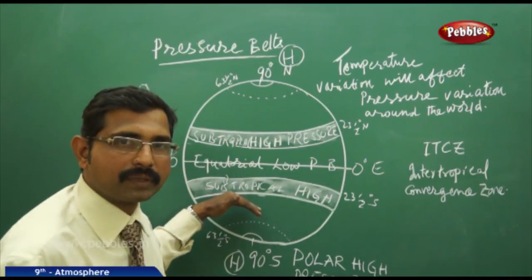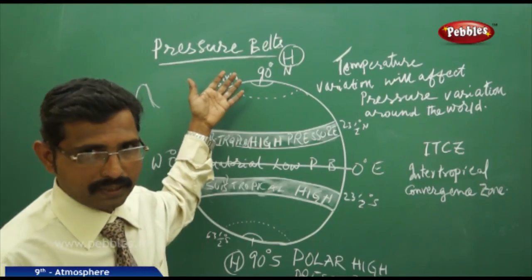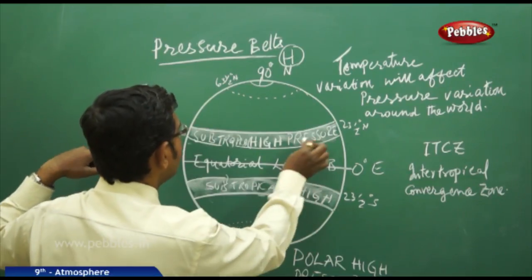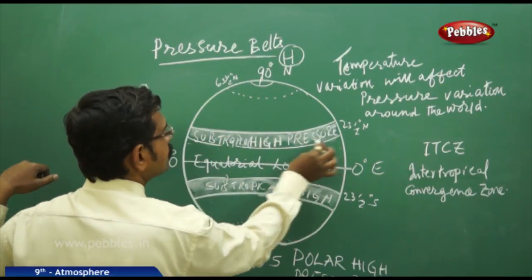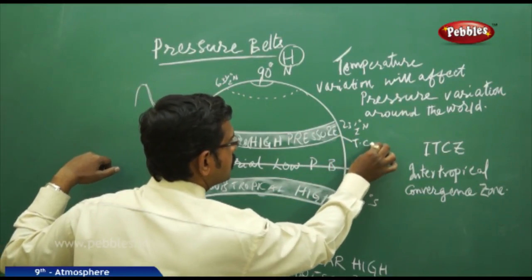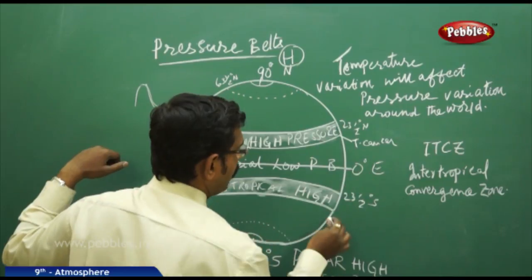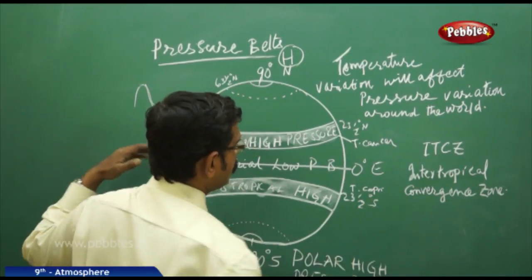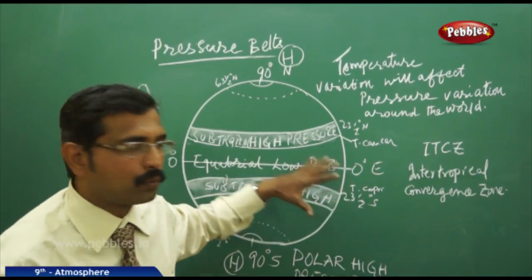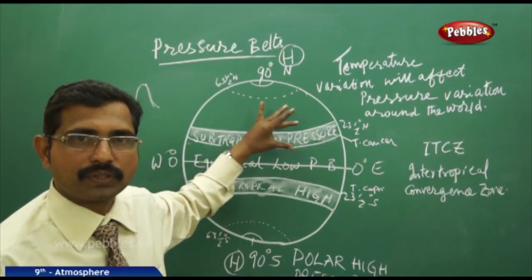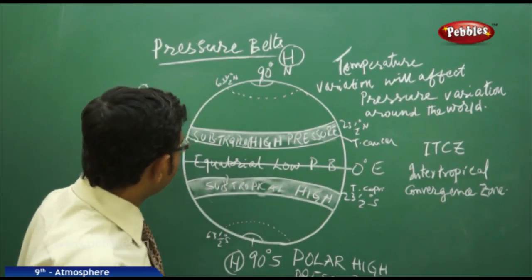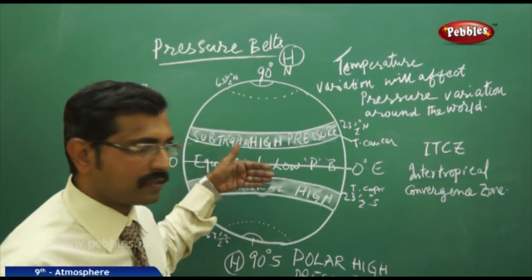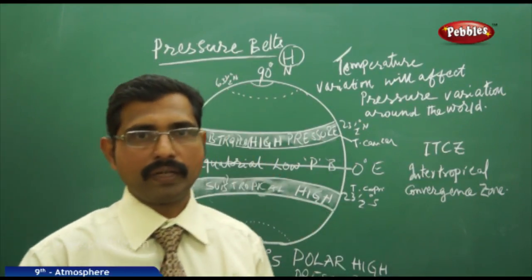This subtropical high pressure exists towards the southern hemisphere and towards the northern hemisphere. Around the latitudes of the Tropic of Cancer and the Tropic of Capricorn, you have the high pressure zones, with the equatorial low pressure belt at the center due to more solar radiation.